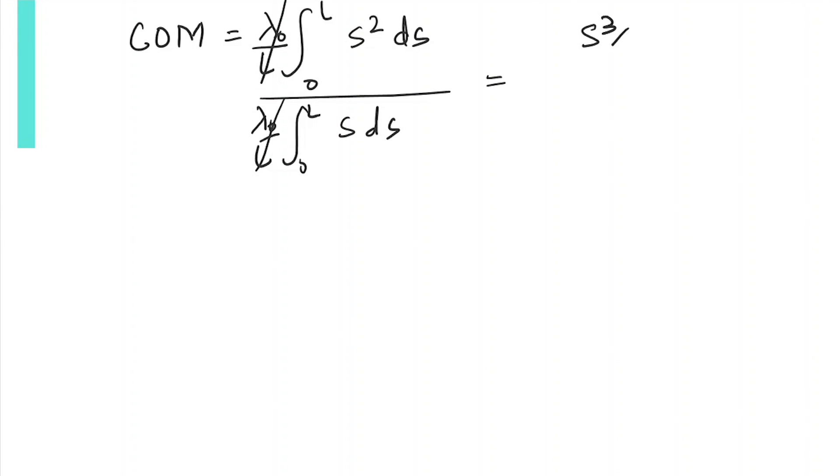This is a simple integration. The numerator is s³/3 evaluated from 0 to L, and the denominator is s²/2 evaluated from 0 to L. This gives us L³/3 divided by L²/2.